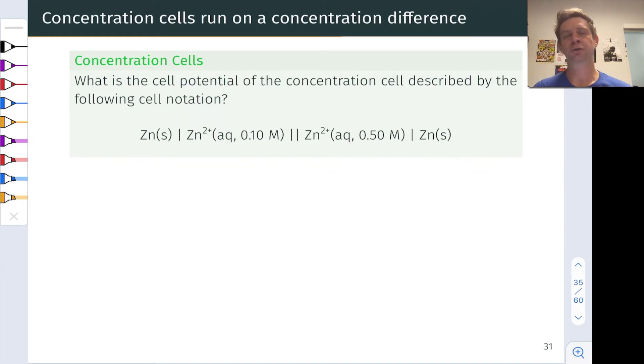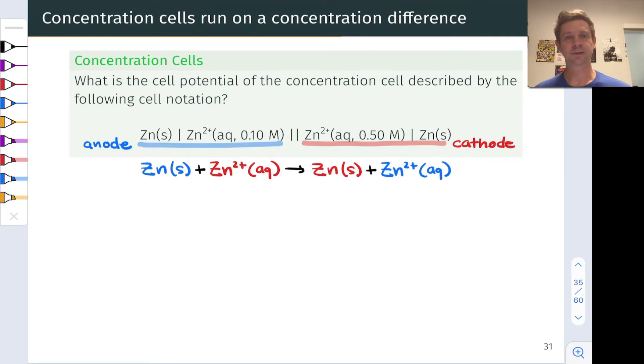Let's take it back to our understanding of cell notation to appreciate what's going on here. To the left of the double vertical bars, we have the anode, where zinc metal is being oxidized to zinc 2+, and the zinc 2+ concentration on that side is 0.10 moles per liter. To the right of the double bars, we have the cathode, where zinc 2+ at a concentration of 0.5 moles per liter is being reduced to zinc metal. Notice the molarity of zinc 2+ is greater in the cathode than in the anode, and this is what provides the driving force for a voltage in a concentration cell. Here's the balanced redox reaction—it's entirely degenerate. Zinc reacts with zinc 2+ to form zinc and zinc 2+, and I've color-coded the zinc and zinc 2+ in the cathode and anode red and blue, respectively.